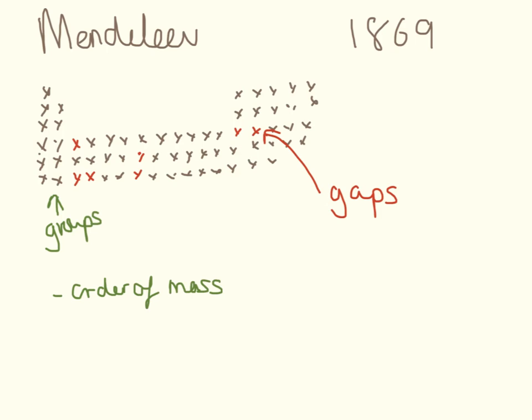So Mendeleev, a few years later in 1869, developed Newlands' idea. They're still all in the order of mass, but most importantly Mendeleev left gaps. In some groups he left really quite big gaps in between where the known things were and where the other known things were, to preserve things in groups having similar properties.